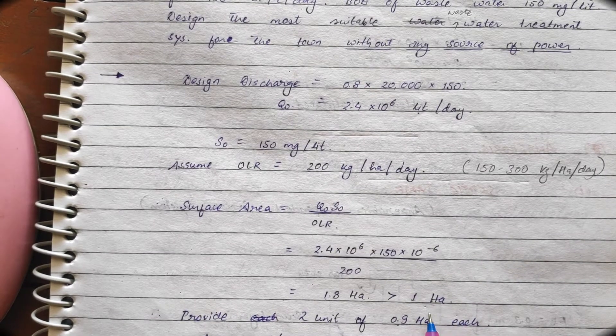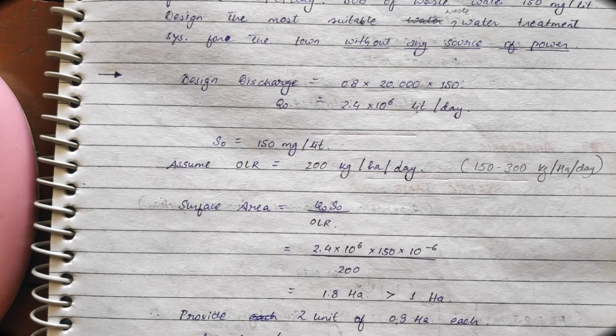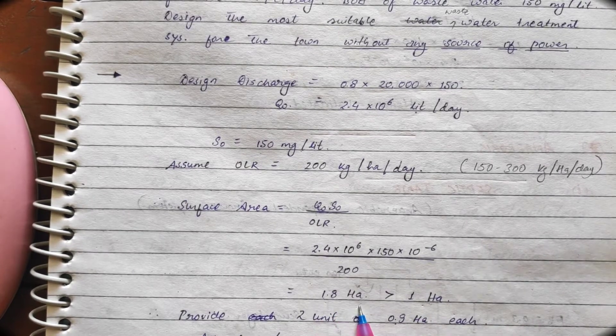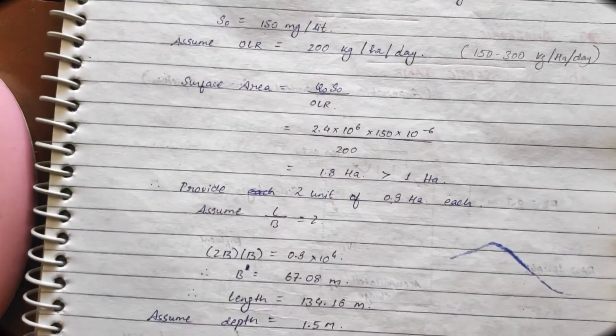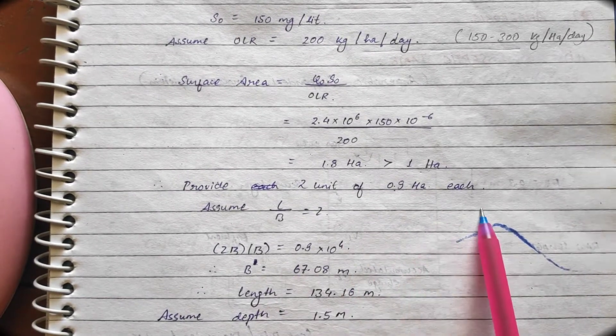How much is the surface area of 1 hectare, 1 unit? That is 0.5 to 1 hectare. So, it is more than that. So, condition satisfy. Now, according to this, provide 2 units of 0.9 hectare each.